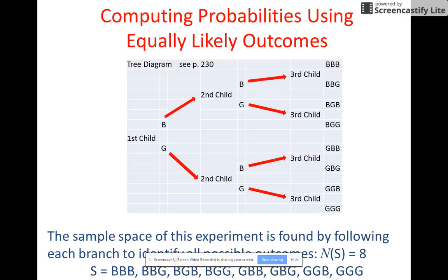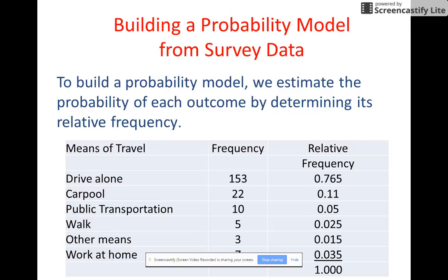Okay. When we have equally likely outcomes, we can use a tree like this. And so say that, what is the probability of a couple having a boy and then two girls? Well, the first child could be a boy or a girl. And then the second child could either be a boy or a girl. And then the third child. And so you wind up with eight possibilities. And so that's how you would calculate probabilities using that have equally likely outcomes. Okay. Now you.